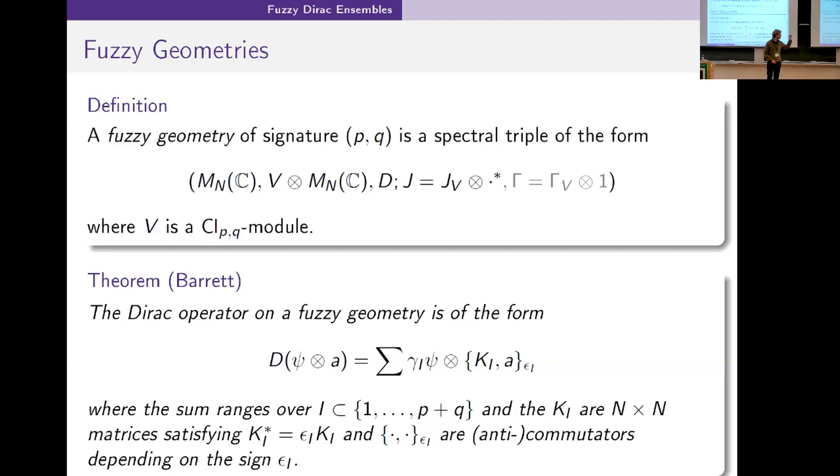Only certain subsets can appear and we know the sign epsilon_i depending on the subset, but really the goal is we have this finite set of matrices that will tell us everything about our Dirac operator.